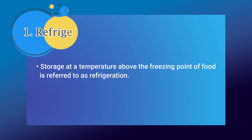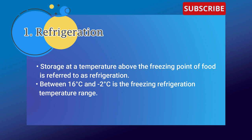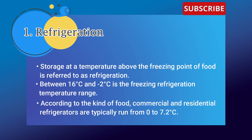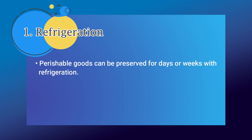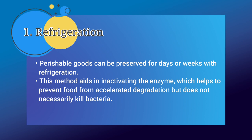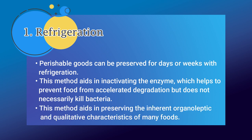Storage at a temperature above the freezing point of food is referred to as refrigeration. Between 16 degrees Celsius and minus 2 degrees Celsius is the refrigeration temperature range. According to the kind of food, commercial or residential refrigerators are typically run from 0 to 7.2 degrees Celsius. Perishable foods can be preserved for days or weeks with refrigeration. This method aids in inactivating enzymes, which helps prevent accelerated degradation, but does not necessarily kill bacteria. It also aids in preserving the inherent organoleptic and qualitative characteristics of many foods.